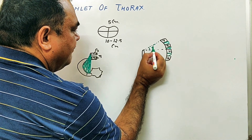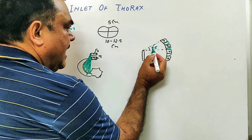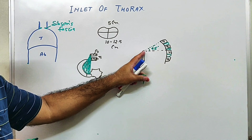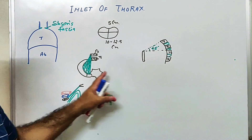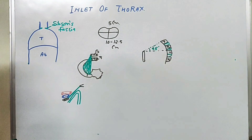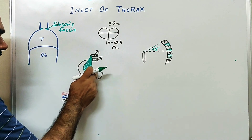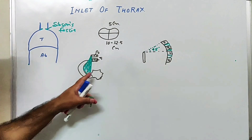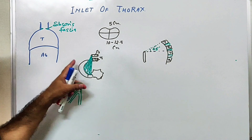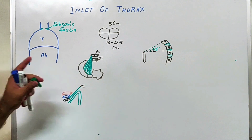The plane of the inlet makes an angle of about 45 degrees with the horizontal. The boundary anteriorly is the superior margin of the manubrium sterni. Posteriorly it is the superior margin of T1 vertebra. On each side it is bounded by the first rib — the medial margin of the first rib and its costal cartilage.